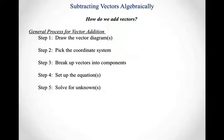To set up our process for how we're going to subtract vectors algebraically, let's step back and remember how we said we were going to add vectors algebraically. Our general process for vector addition was to start by drawing vector diagrams, pick a coordinate system, use that coordinate system to break our vectors up into components, then set up a set of component equations — one equation for each coordinate axis — and use algebra to solve for the unknowns.